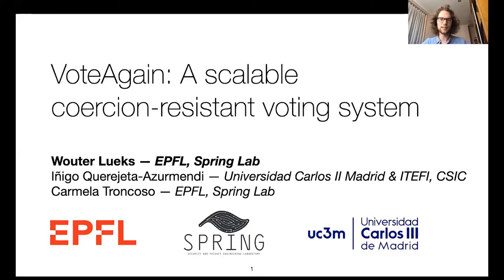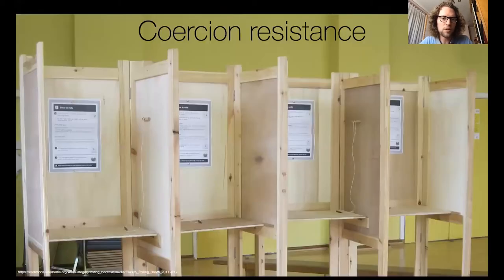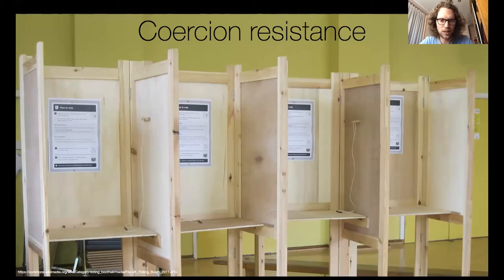Coercion resistance is an important property in voting systems in general, as it ensures that voters can vote the way they want without fear of being forced by a coercer. In traditional voting systems, this is achieved by letting voters vote in the privacy of a polling booth, so that coercers cannot verify how voters vote. In the electronic voting setting, which is what we'll be focusing on in this talk, that is not the case.